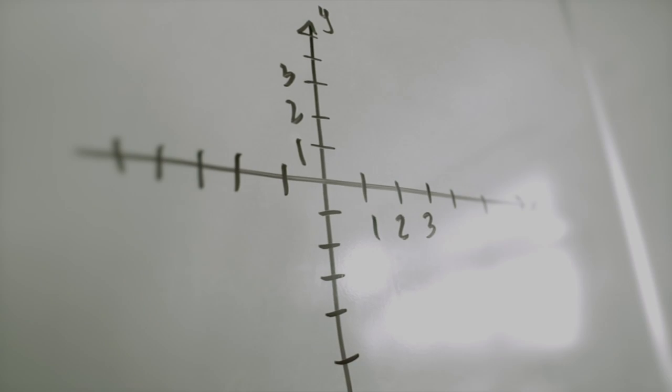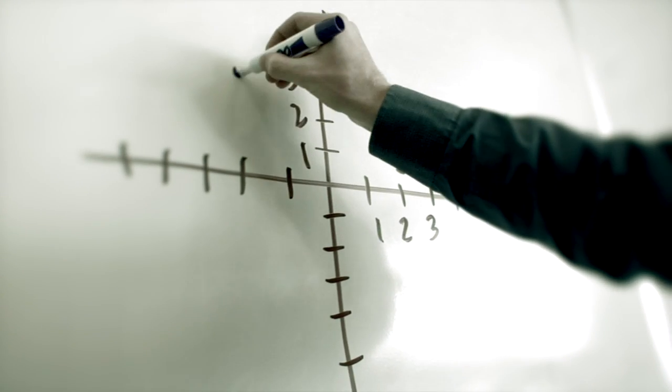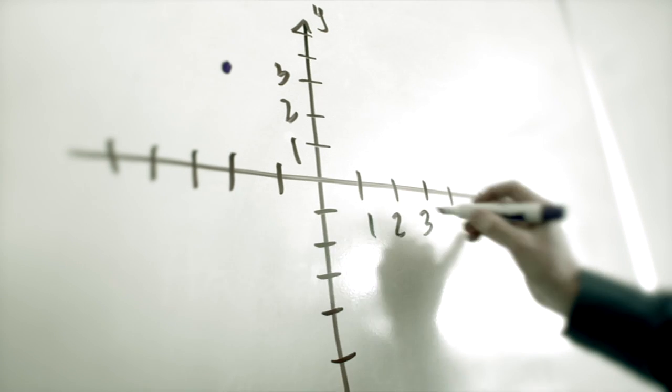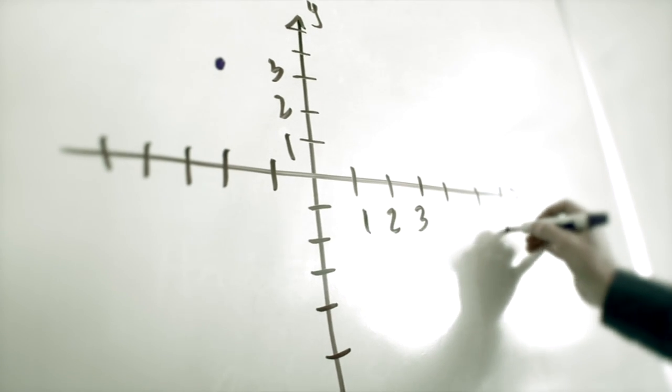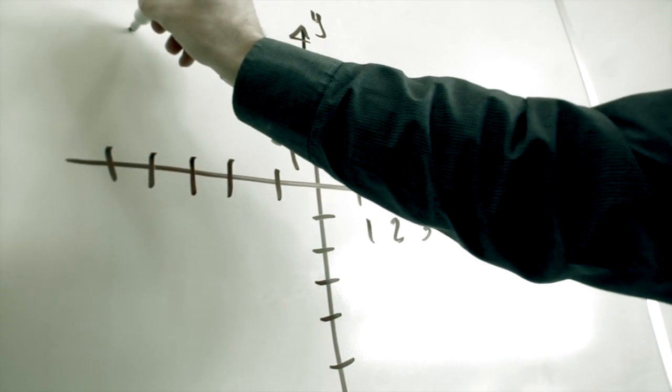Let's say we wanted our line to go through the two points negative two comma three and six comma negative one. We could draw on that line.